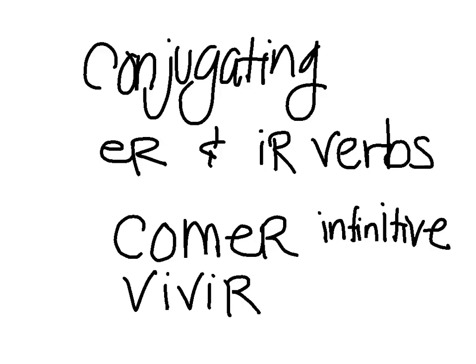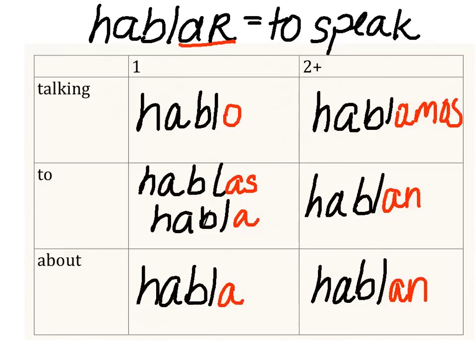Infinitives always mean 'to something' — to this, to that. So let's look at verbs we've already conjugated before. Conjugating is changing them. For example, if we look at the verb hablar — up on the top here we have the infinitive, hablar — it's still got the AR at the end.